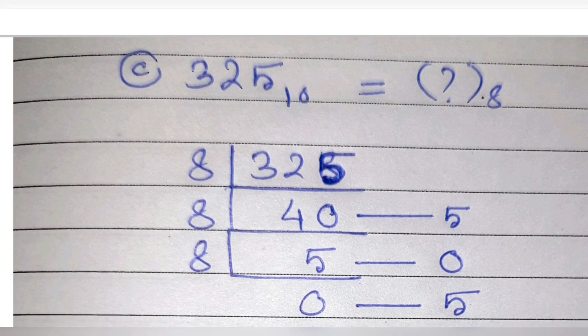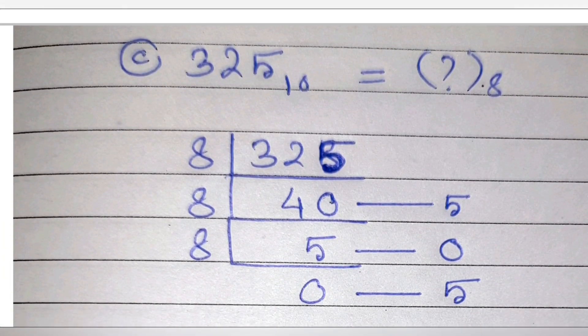The next question, 325 we have to convert into octal. We'll divide 325 by 8. First we'll get 40 and remainder is 5. Again 40 if we divide we'll get 5 and remainder is 0. If we divide 5 by 8 we'll get 0 and remainder is 5. So the final answer will be 505.